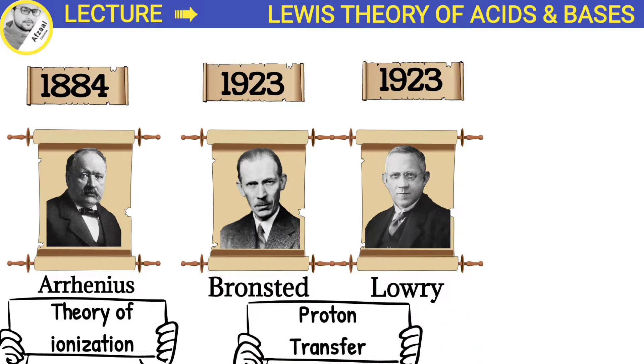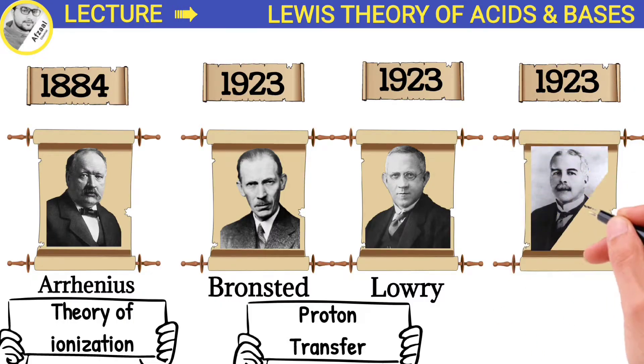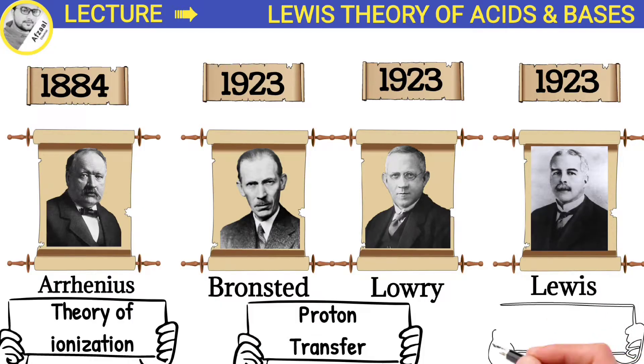The Arrhenius and Bronsted-Lowry concepts of acids and bases are limited to substances which contain protons. In the same year, Gilbert Newton Lewis proposed a more general and broader concept of acids and bases on the basis of electron pair transfer.